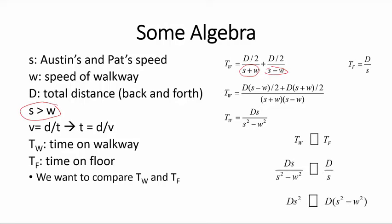Well, this is just the same as comparing D times S squared and D times S squared minus W squared. Since S squared—again, keep in mind that S is greater than W—since S squared is always greater than S squared minus W squared, we have that this quantity is greater.